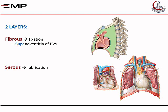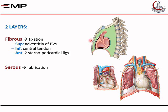The fibrous layer is fixed by blending above with the adventitia of the large blood vessels. It is fixed below to the central tendon of the diaphragm, and anteriorly it is fixed to the back of the sternum by two sternopericardial ligaments. The only place where there is no fixation of the pericardium is the back and the two lateral sides.